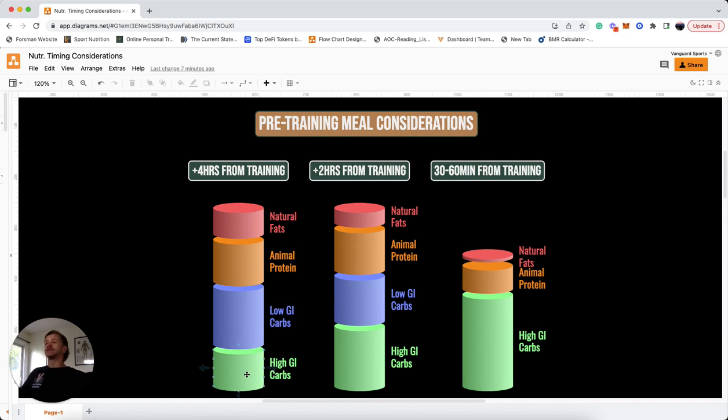One big trend to notice is that our high glycemic carb amount is going to increase the closer we get to training. If you're four hours out from training, you're going to have a moderate amount of high glycemic carbs but a higher amount of lower glycemic carbs because we want to digest those carbs and have a slow blood sugar increase over time. That way you've got enough carbs for normal function before training, but you still have blood sugar or glucose in the blood during that training session. Next, you'll have your allotted amount of animal protein. So if you're shooting for 200 grams in the day and you eat five meals a day, this is going to have about a fifth of that, around 40 grams of protein. Then your natural fats - if you're four hours out, you're going to have about your normal amount of fats per meal.